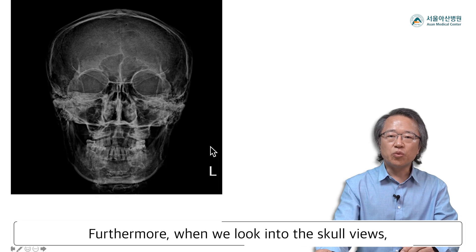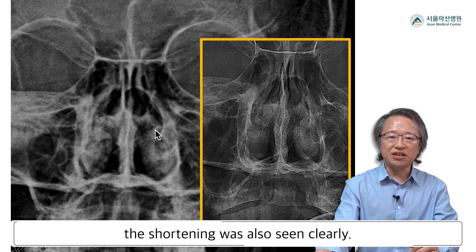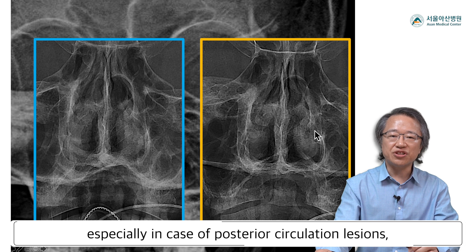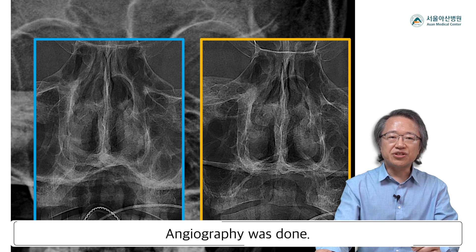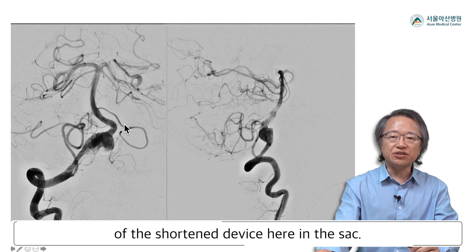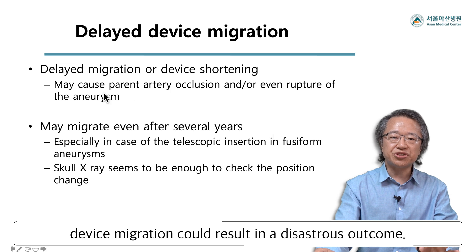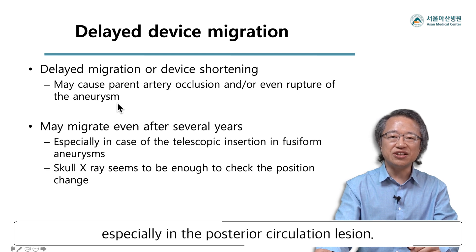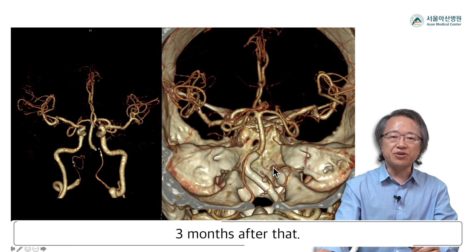Furthermore, when we looked at the skull views, the shortening was also clearly seen. We need to check the skull view carefully, especially in cases of posterior circulation regions where device migration is an issue. Angiography confirmed the distal margin of the shortened device within the sac. As you know, device migration could result in a disastrous outcome — we need to keep this in mind, especially in the posterior circulation region. We performed retreatment with another flow diverter.